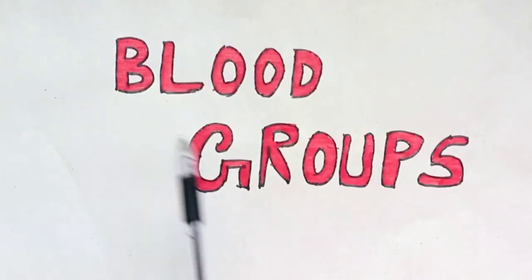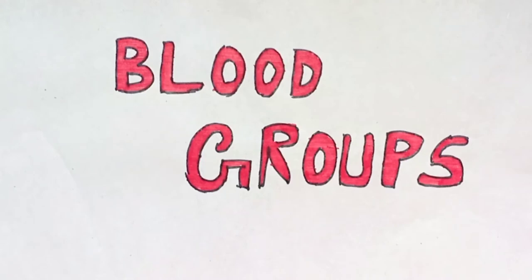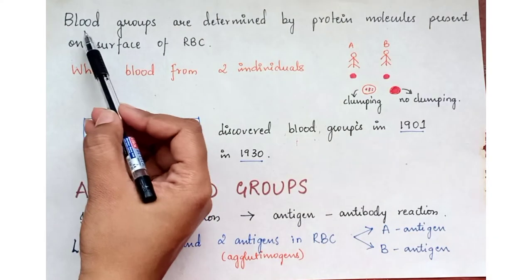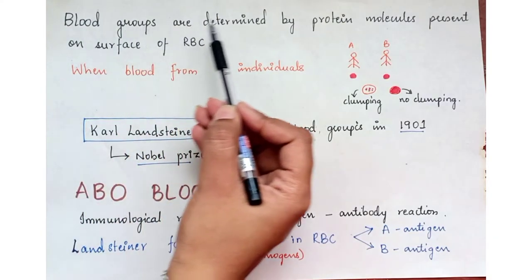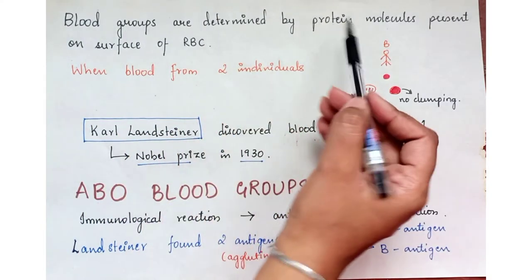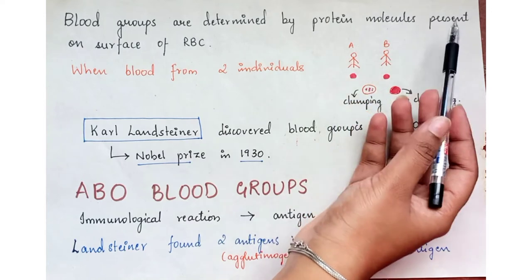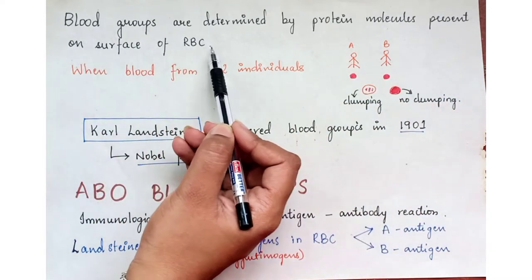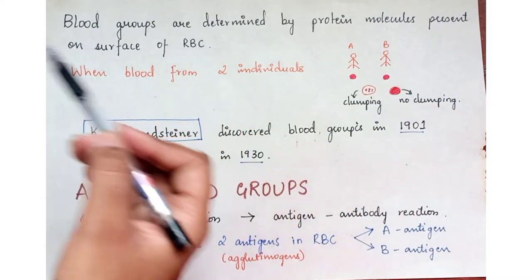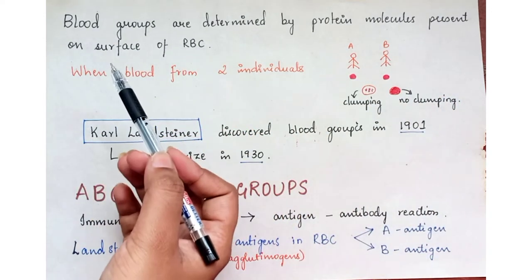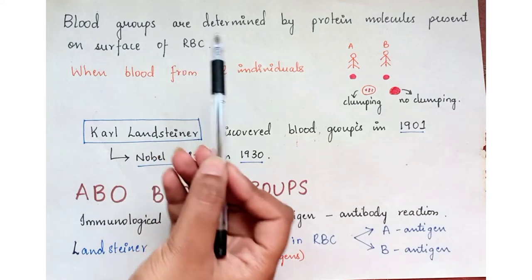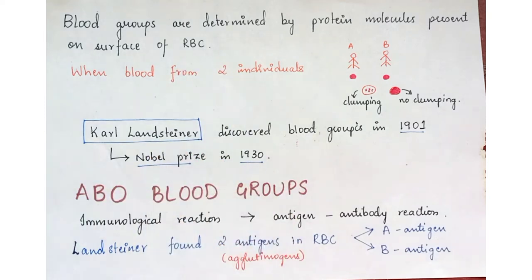Blood groups are determined by protein molecules present on the surface of RBCs. So here we understand that there is some protein molecule on each RBC.